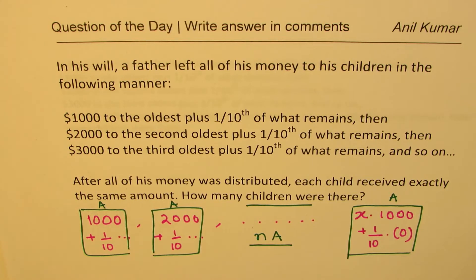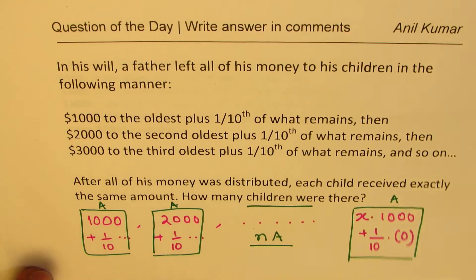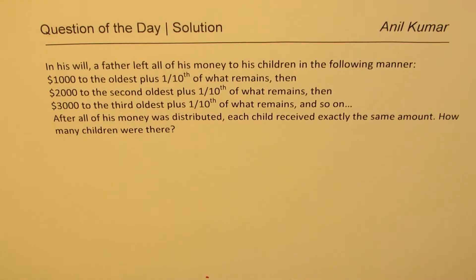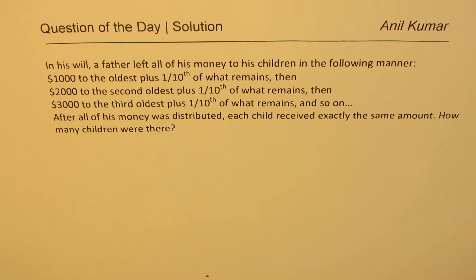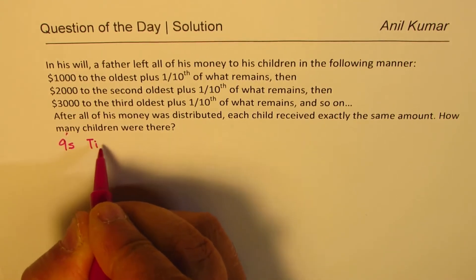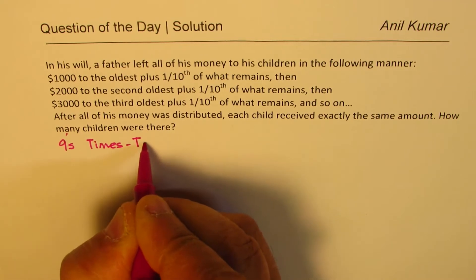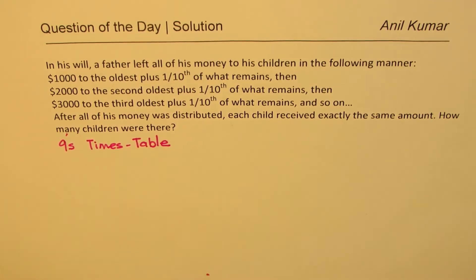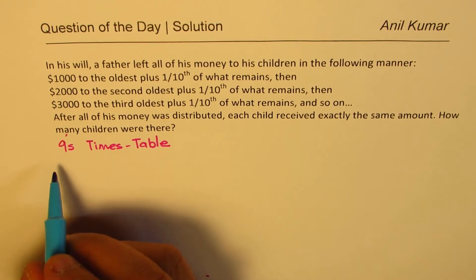Now let us see how to get these numbers — it is really very difficult to figure out. The solution of this question lies in a concept which is the 9 times table. So what do you observe in the 9 times table? Let's put the numbers for the 9 times table and look into those numbers.